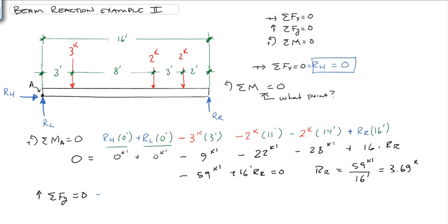We get RL minus 3 kips, minus 2 kips, minus 2 kips, plus RR.